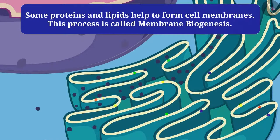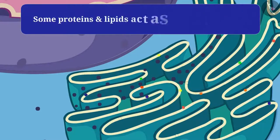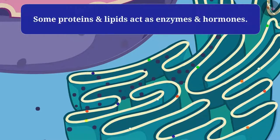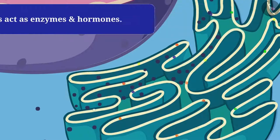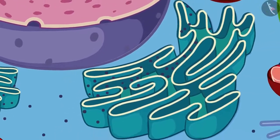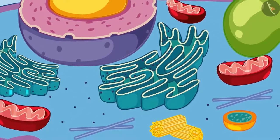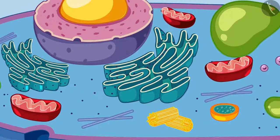The endoplasmic reticulum provides a large surface for synthesis of proteins and lipids inside the cell and also gives them a pathway to move to other parts of the cell as needed. Some proteins and lipids help to form cell membranes — this process is called membrane biogenesis — and some proteins and lipids act as enzymes and hormones. So it is the endoplasmic reticulum that synthesizes basic biological molecules of the cell and moves them to different parts.